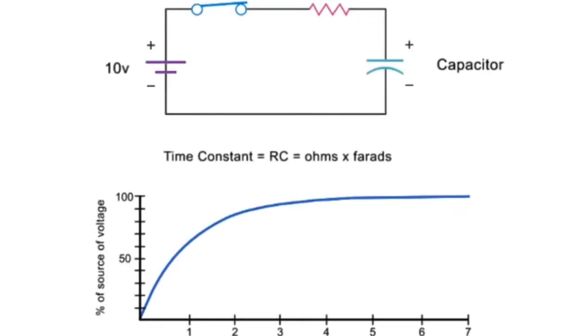For example, in this circuit, if you have a 1 megaohm resistor and 5 microfarads capacitor, the time constant would be 5 seconds.